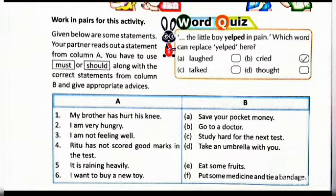Let's start. Suppose your partner says, 'My brother has hurt his knee,' meaning my brother's knee is injured. Then you may say, 'He should put some medicine and tie a bandage.' He should put some medicine on that injury and he should tie a bandage.